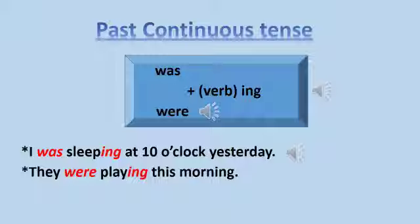What is the past continuous tense? We use it when we want to talk about actions that were going on in the past for a period of time. The form is was or were plus verb-ing. For example, I was sleeping at 10 o'clock yesterday. They were playing this morning.